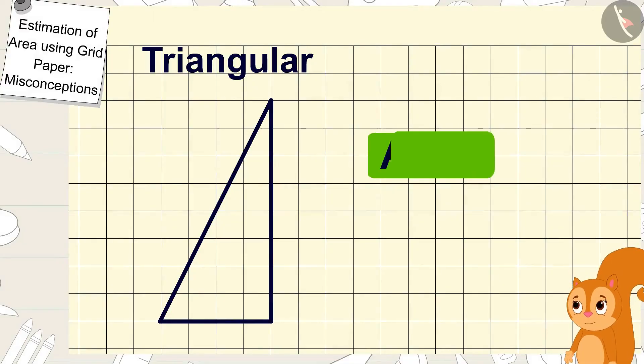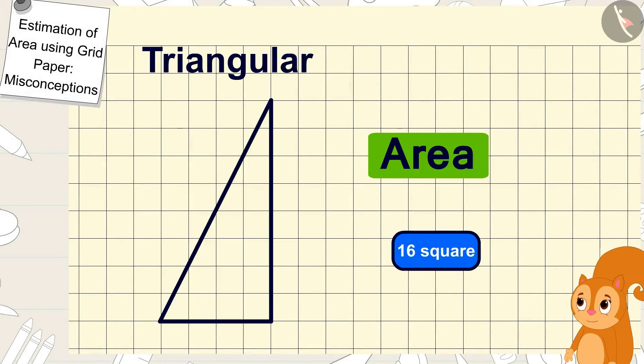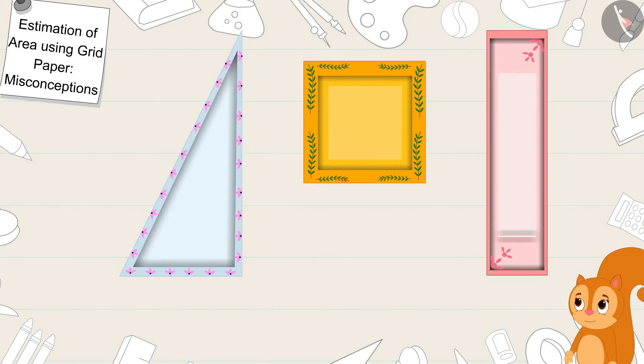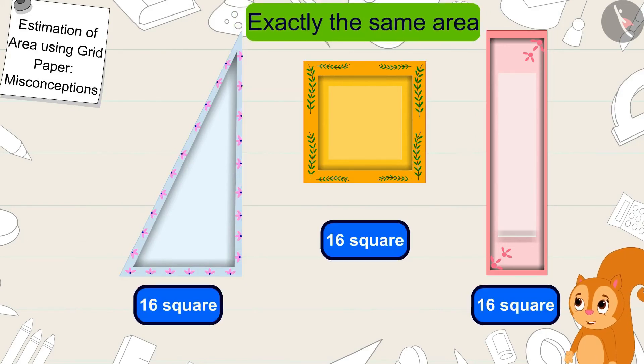Chanda too found the area of the triangle shaped plate just like you. Hey Gaggoo, there are 16 squares in the area of the triangle shaped plate too. You are right. The shapes of these plates may be different, but their areas are exactly the same. Chanda said to Gaggoo.